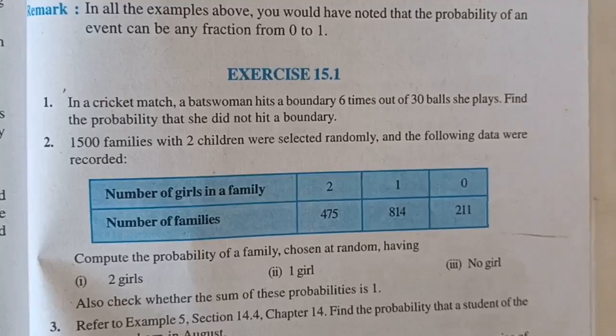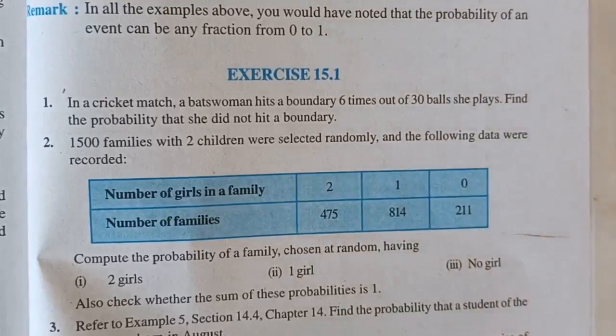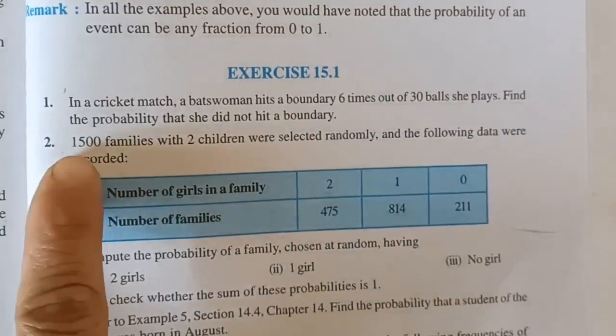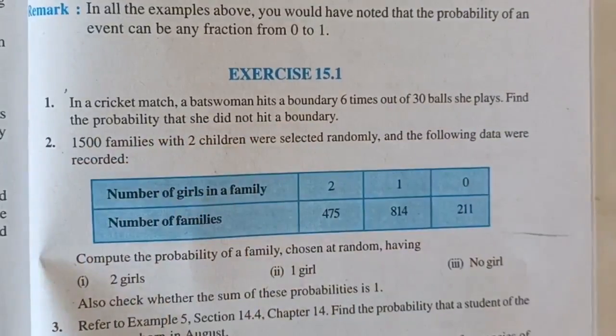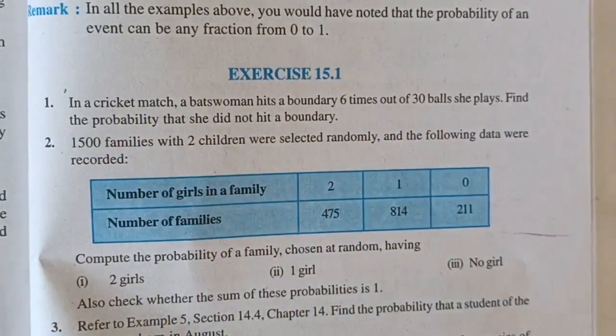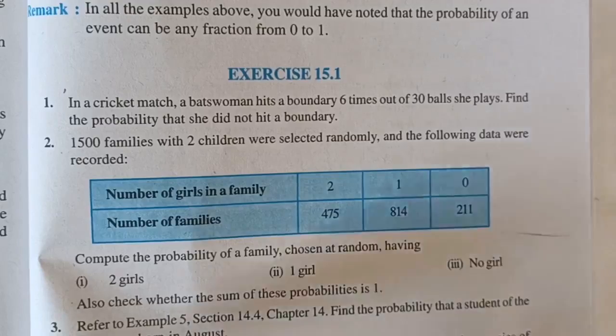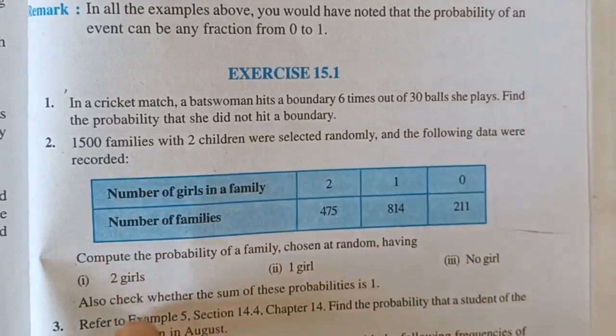Exercise 15.1, Question number 2: 1500 families with two children were selected randomly and the following data were recorded.